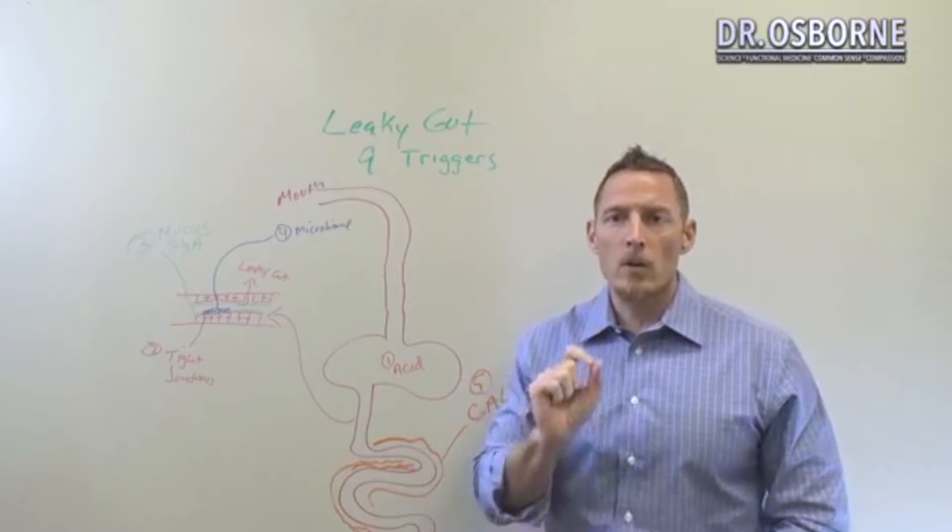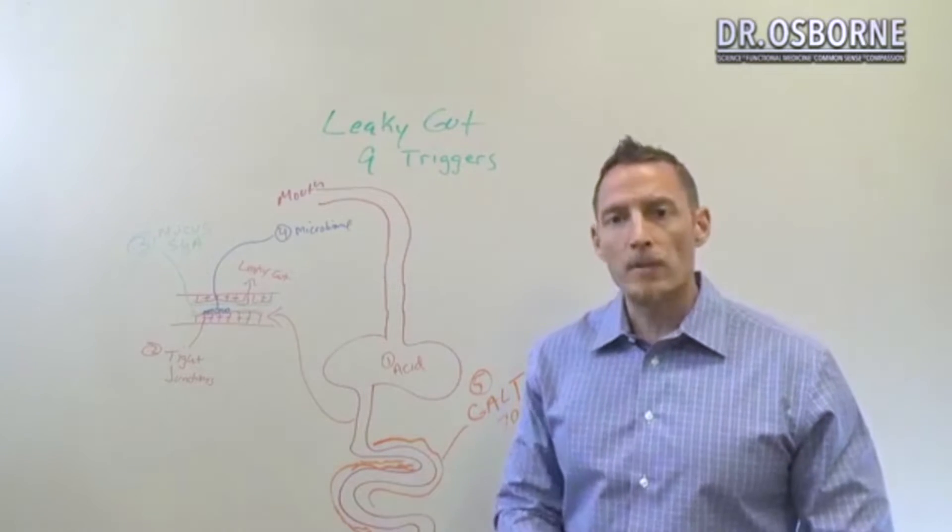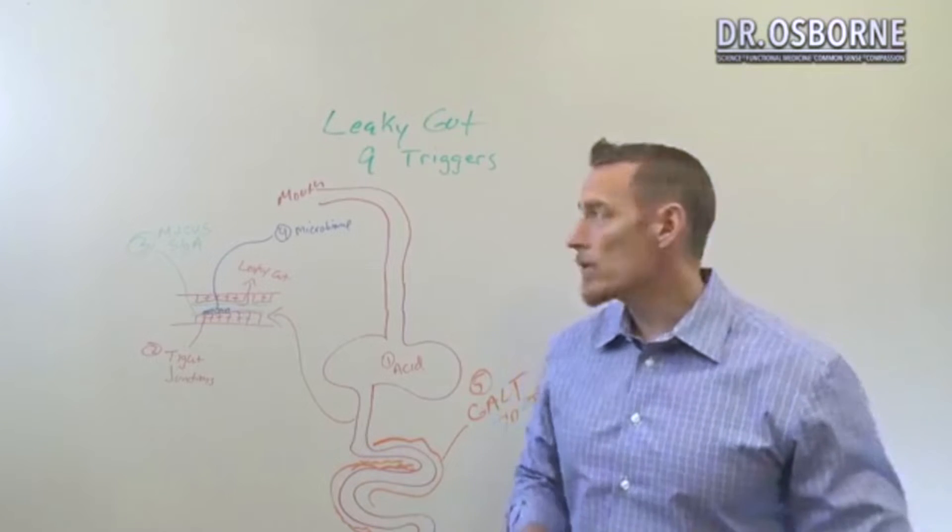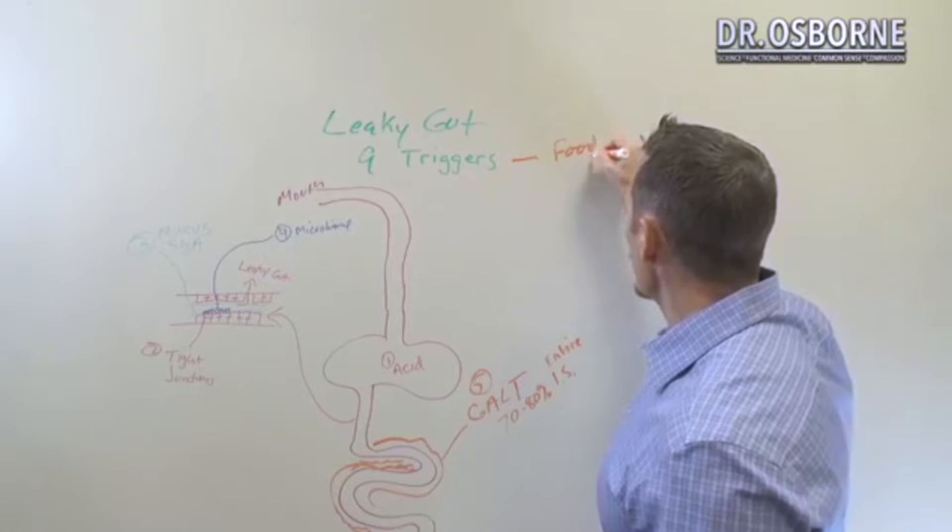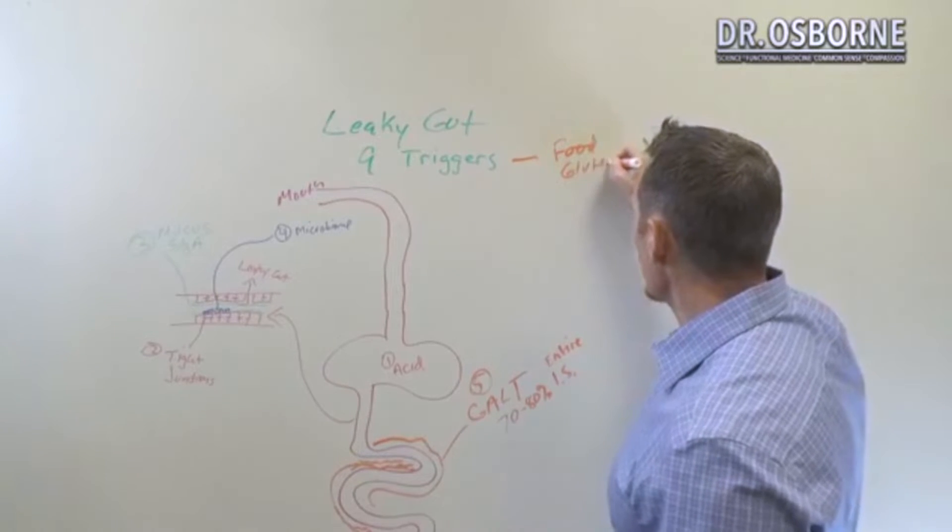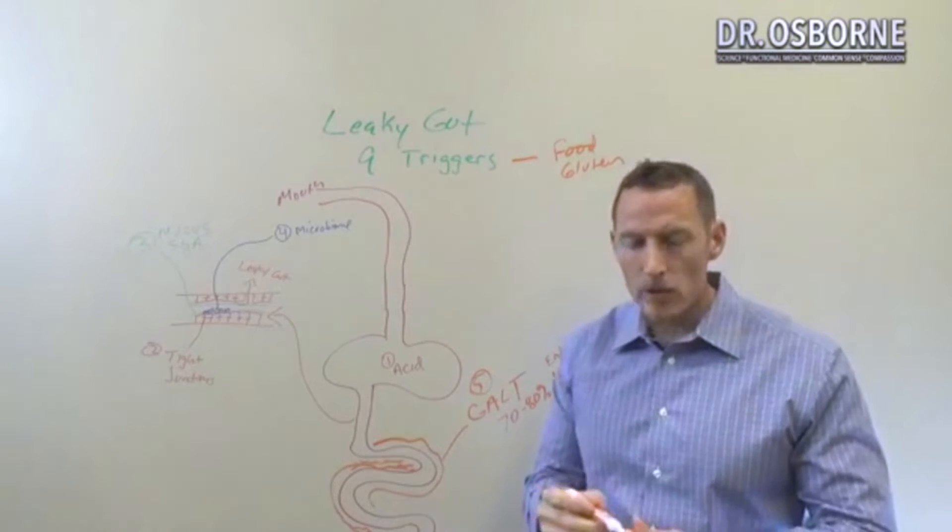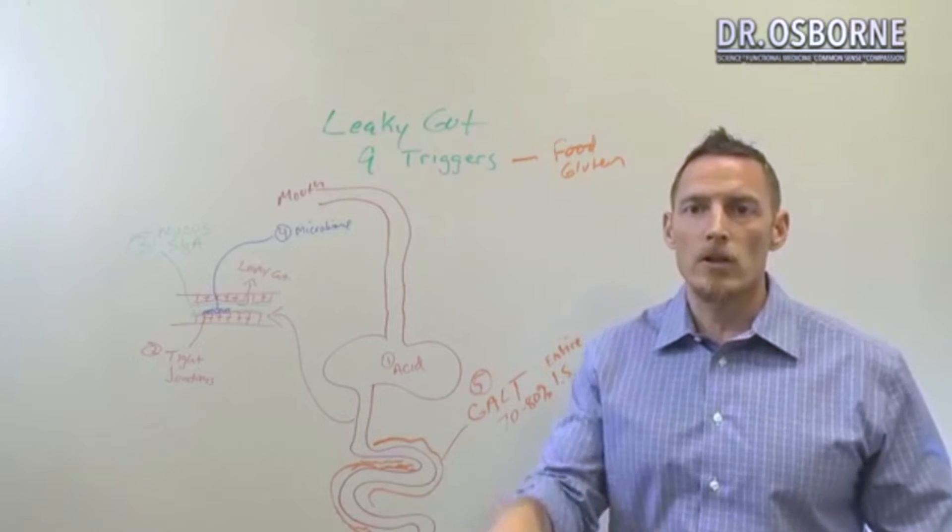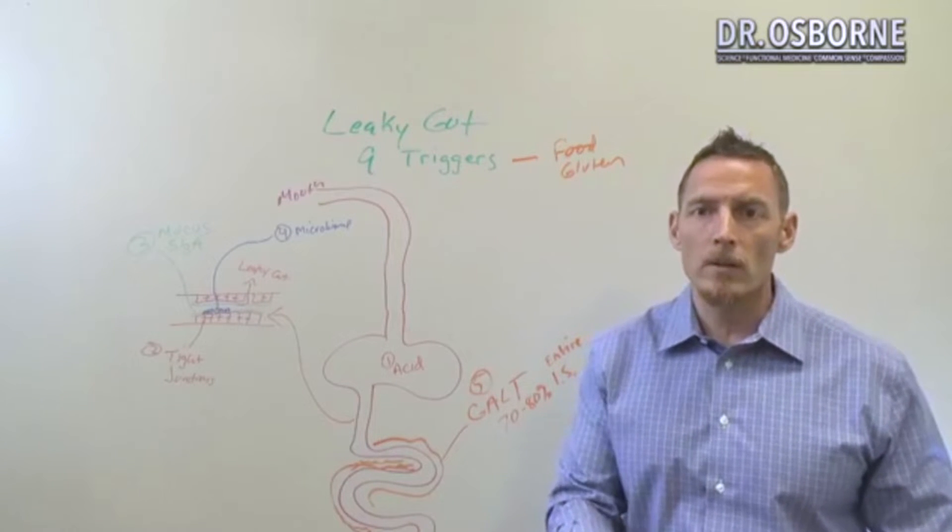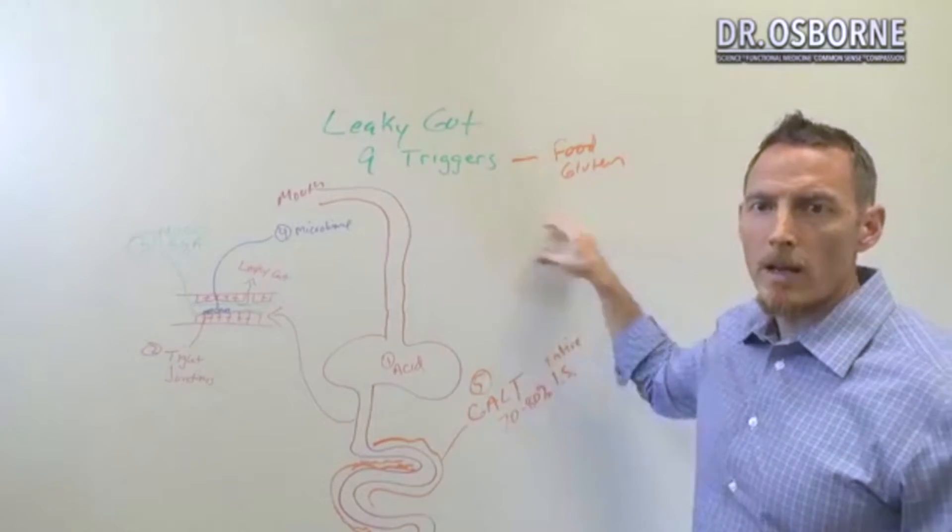the number one thing that can create and trigger a leaky gut is absolutely food. And I would say if we're talking about which food, the one that's probably the most well studied is gluten, but it's more than just gluten. We've got dairy proteins that can do it, gluten can do it, food allergens can do it, food intolerances can do it. But gluten is probably one of the most well studied.